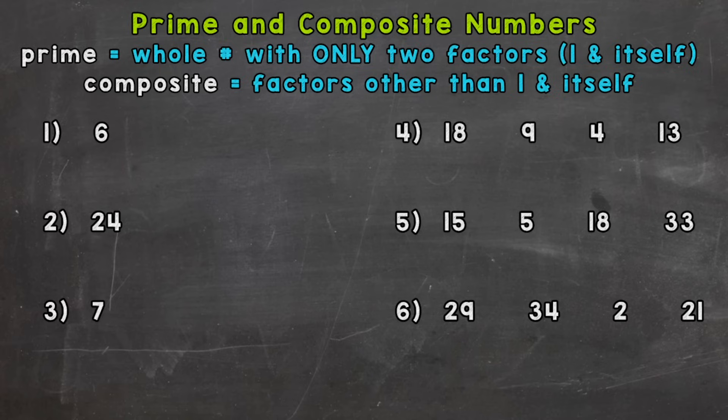Now, for numbers one, two, and three, we're just going to determine if those are prime or composite. And then for numbers four, five, and six, we're going to pick out which ones are prime out of the list of four.